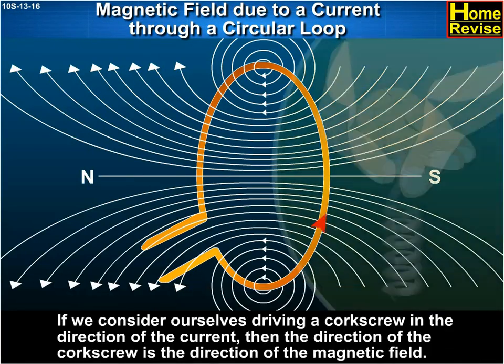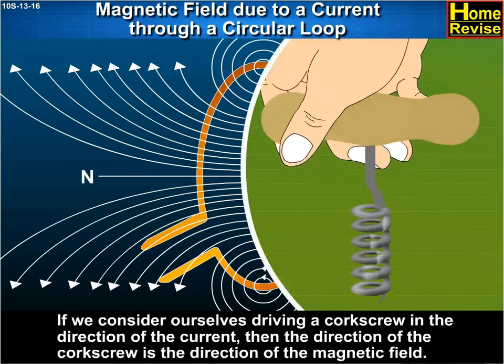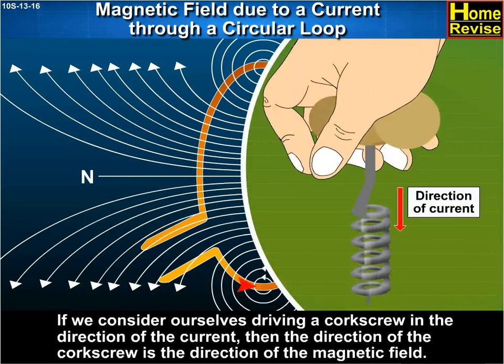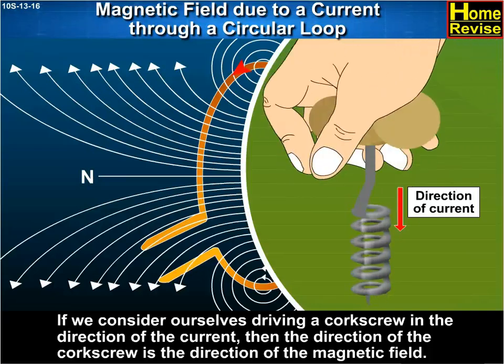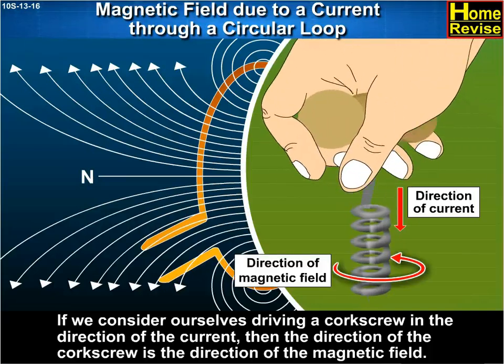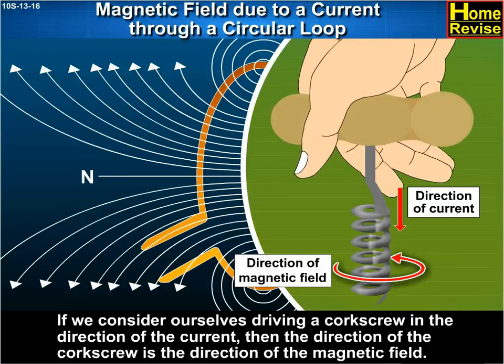If we consider ourselves driving a corkscrew in the direction of the current, then the direction of the corkscrew is the direction of the magnetic field.